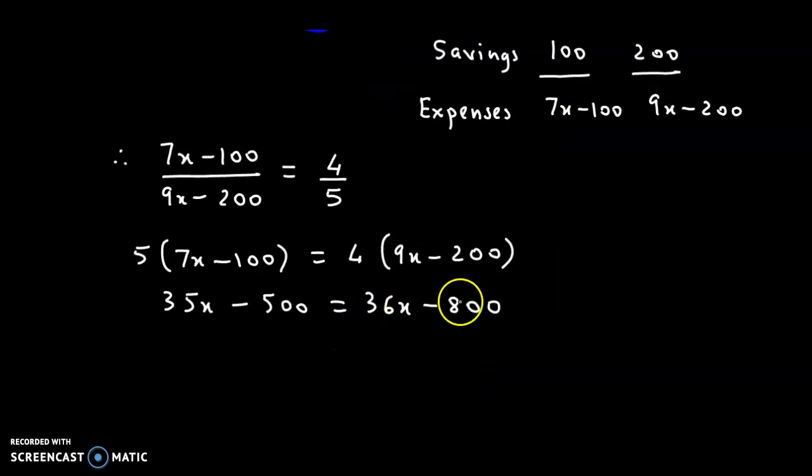Let's bring the like terms on one side. 800 minus 500 on the left gives 300, and on the right we have 36x minus 35x. So we obtain x equals 300.